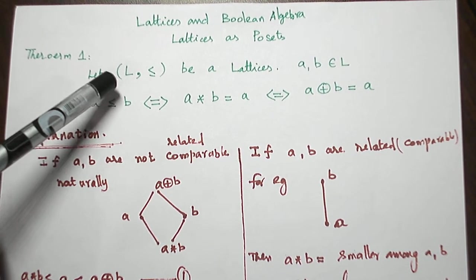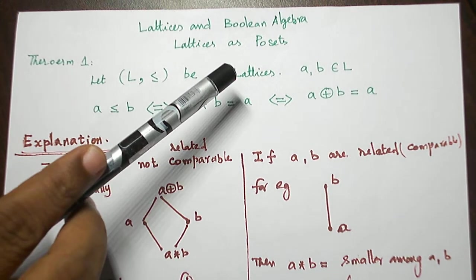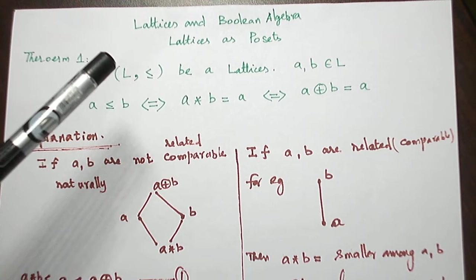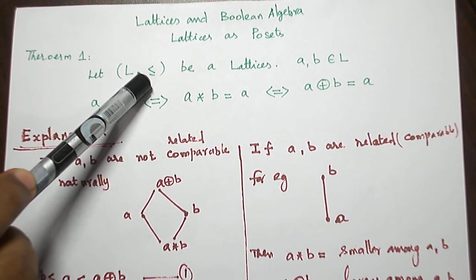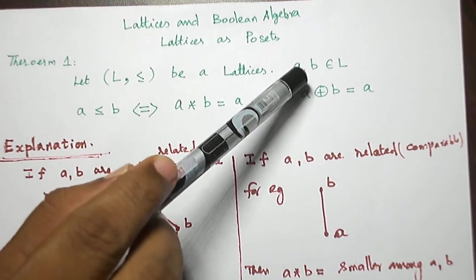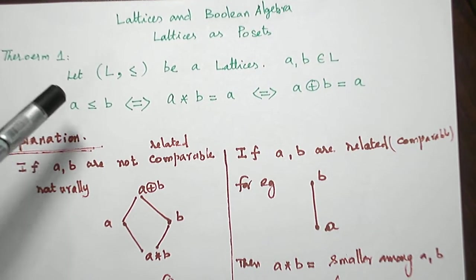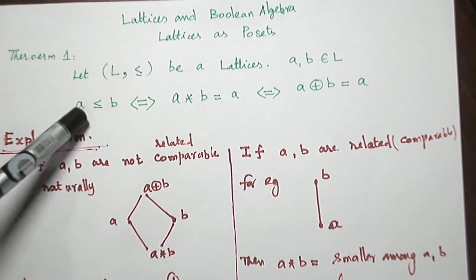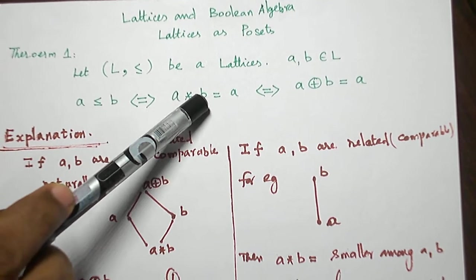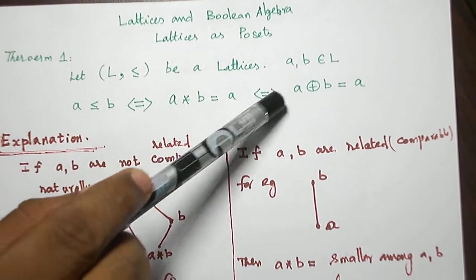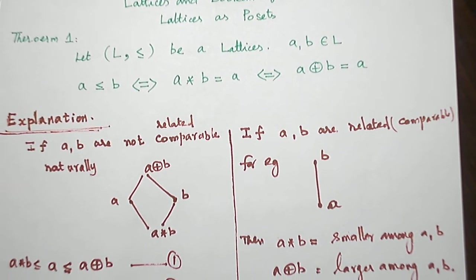First, let us consider a lattice as a poset L with a less than or equal to relation. Take two elements A, B belonging to L. Now A is related to B — A ≤ B — if and only if A∧B = A, if and only if A∨B = B. This is what we are going to prove.